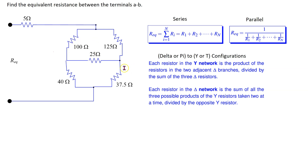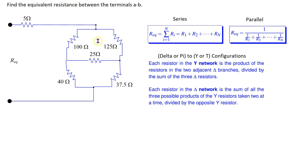Looking at this bridge circuit we can see that there are two deltas. There is an upper delta of resistors and there is a lower delta of resistors. Suppose we use the upper delta of resistors and apply the delta to Y transformation.